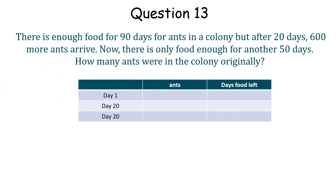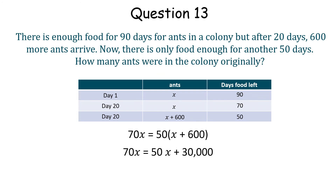On day 1, we have an unknown number of ants — we'll call that x — and we've got 90 days of food. On day 20, we still have x ants, but food is down by 20 days. That same day, another 600 ants arrive, but the food, including the extra ants, is only going to last for 50 days. On day 20, we had 70x total food for the ants. This changed to 50 times x plus 600 worth of food left when the extra ants arrived. We can equate the two scenarios on the same day, getting 70x equals 50 times x plus 600. Solving this for x, we get that there were 1,500 ants originally.